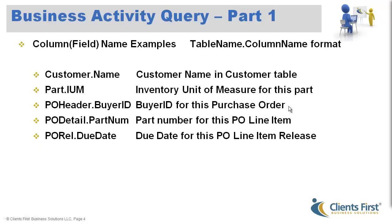They've also done a good job on column names, and it's TableName.ColumnName format. So the customer name in the customer table is called Customer.Name. Part.IUM is the inventory unit of measure for that part. POHeader.BuyerID is the buyer ID for this purchase order. The part number for that PO line item, the due date for that PO line item release. I'm going to leave this up a little so you can review it.